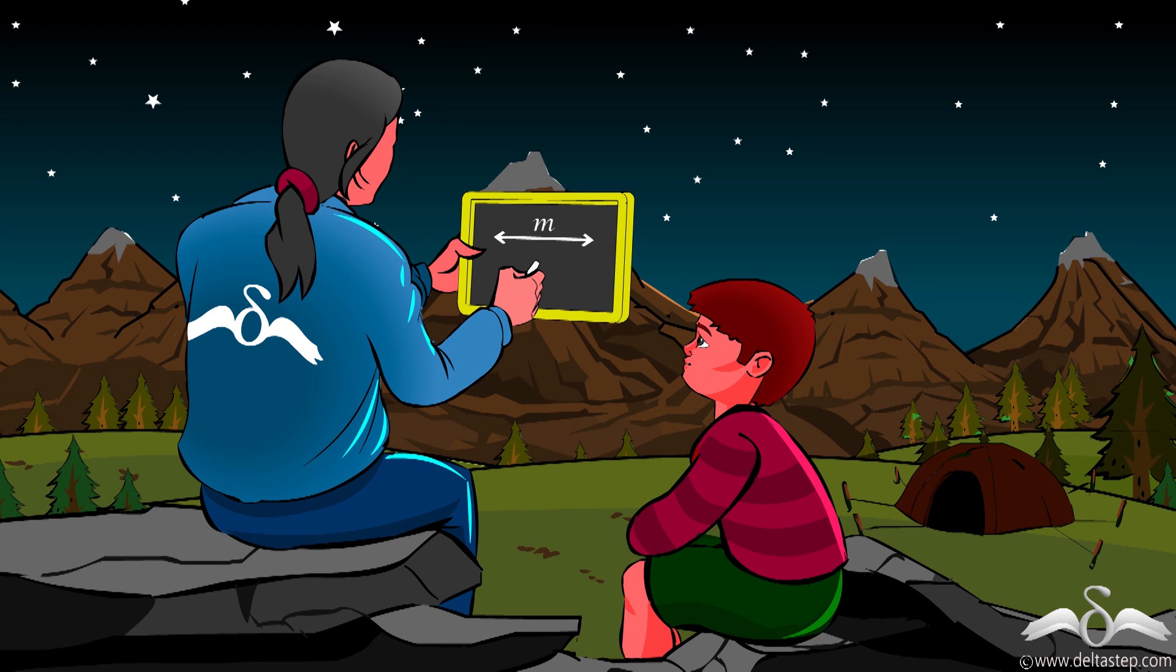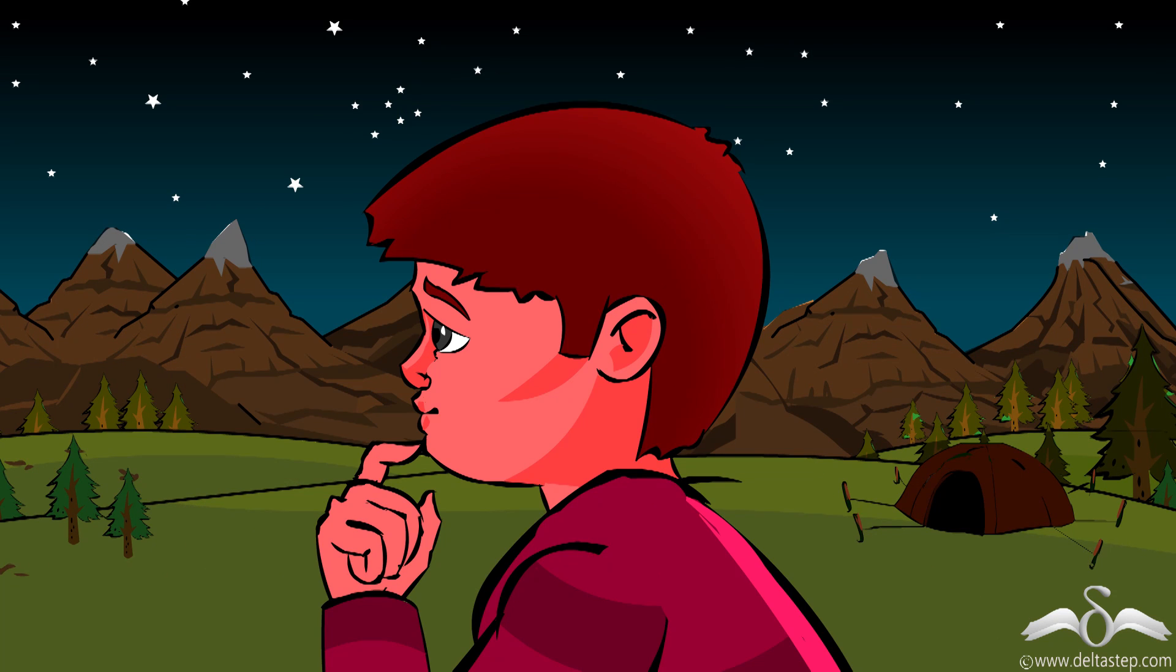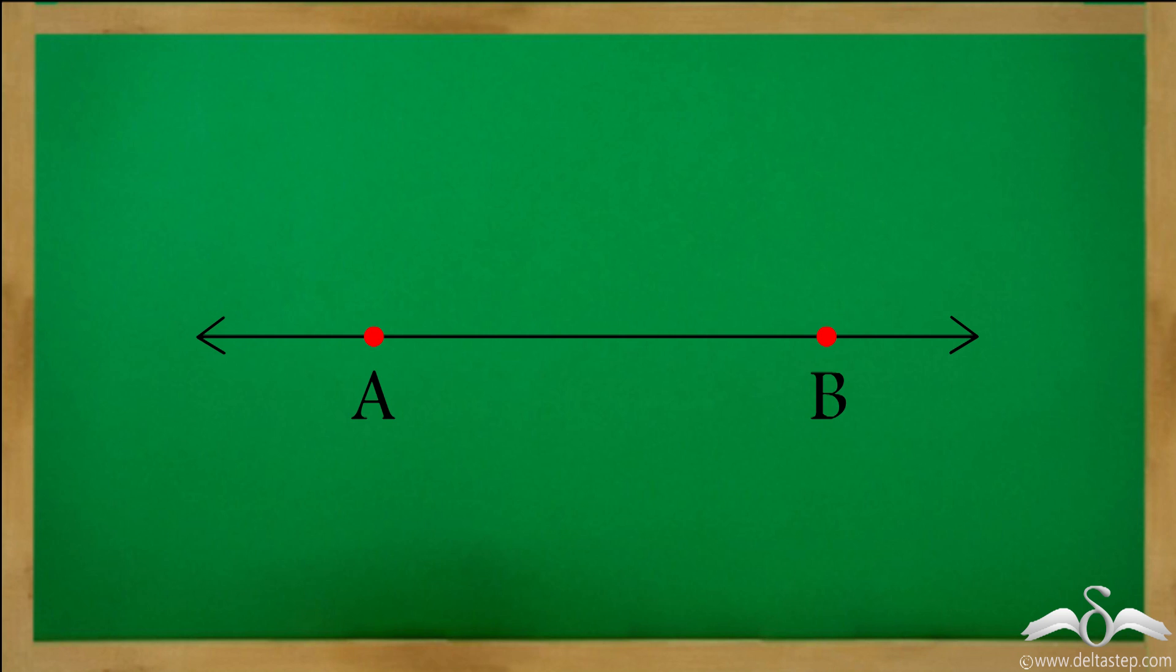A line can also be represented using any two points on the line. And how can we do that? A line through points A and B is denoted as this. We put this small line with arrows on both sides to indicate that it extends indefinitely in both the directions.